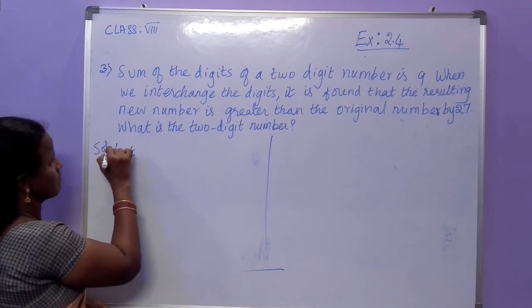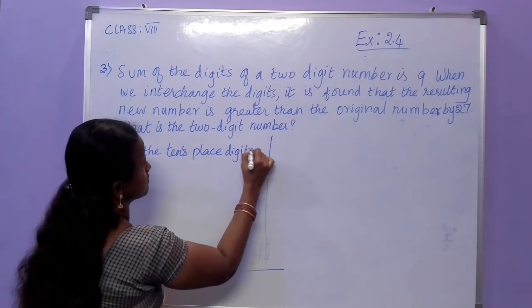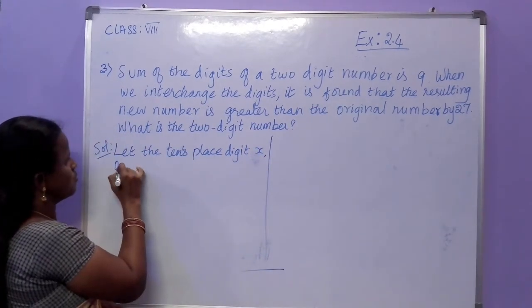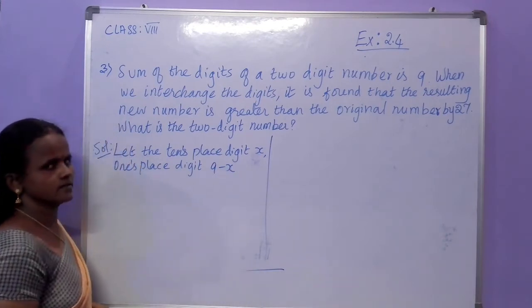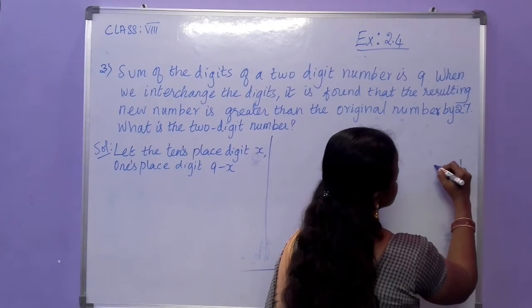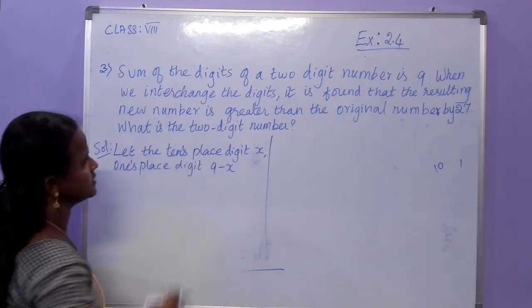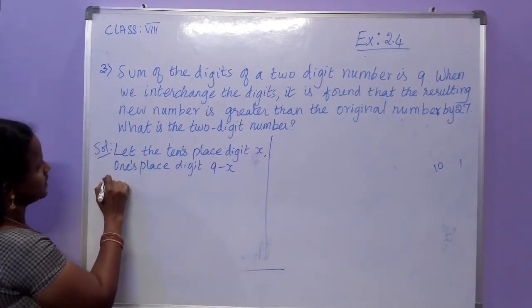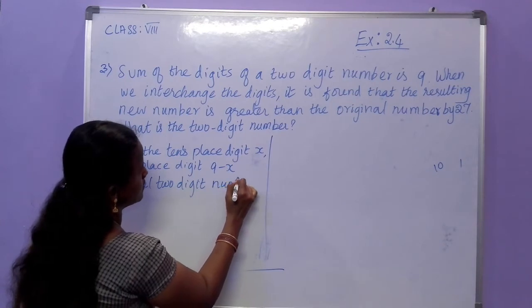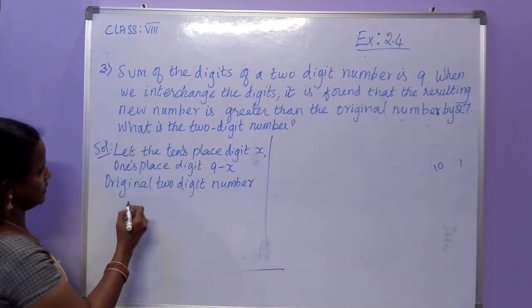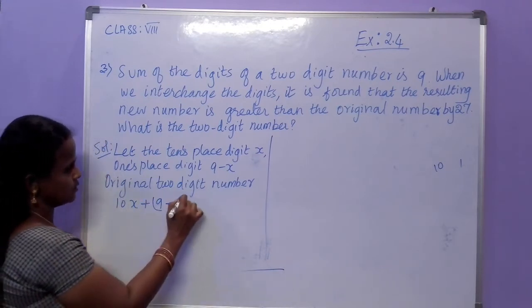Let the tens place digit be x. Then the ones place digit is 9 minus x. So the original two-digit number is 10x plus (9 minus x).